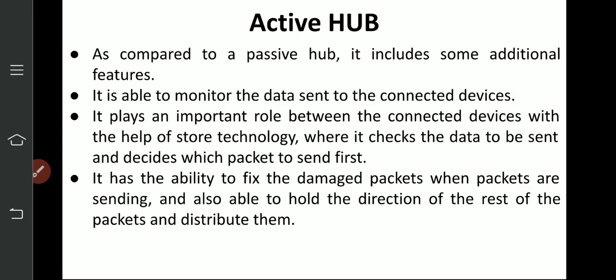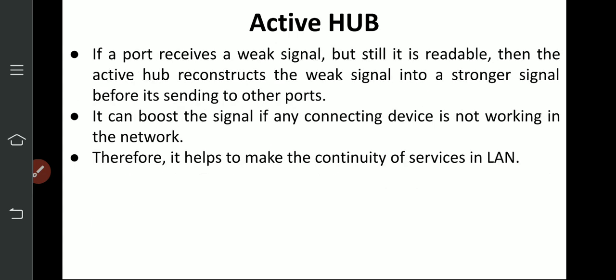The active hub does logical work. Data comes in from a port and needs to be transmitted. Which packet to transmit first — it uses a first-come first-out ability. It has the ability to fix damaged packets when packets are being sent, and is also able to hold and redirect the rest of the packets and distribute them. It can select the best path and if any port is damaged, it can use another path through another port.